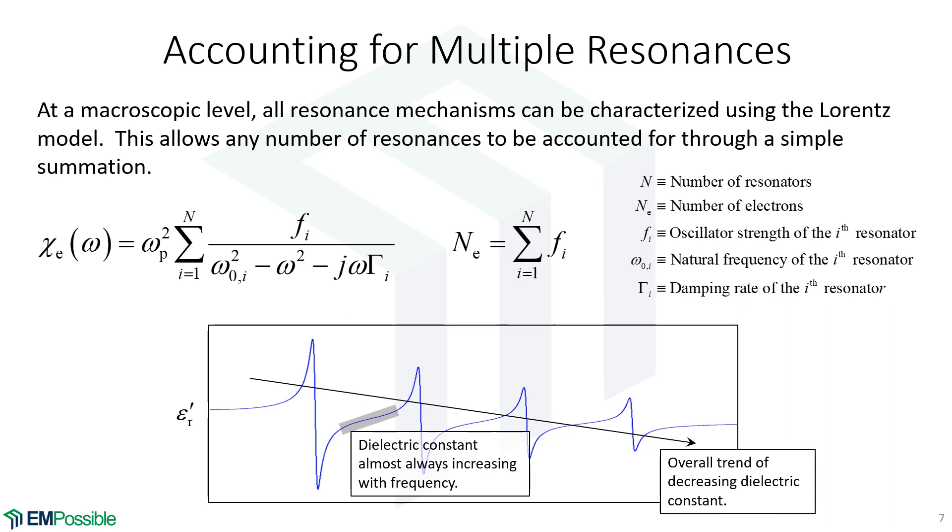How do we account for multiple resonances? We sum all the Lorentz oscillators for each resonance type. There's still only one plasma frequency—it comes outside the summation. But we sum all of these. This number, the oscillator strength, accounts for different strengths of resonances. Summing all oscillator strengths should give the number of electrons, but really it controls the strength of each resonance relative to others.